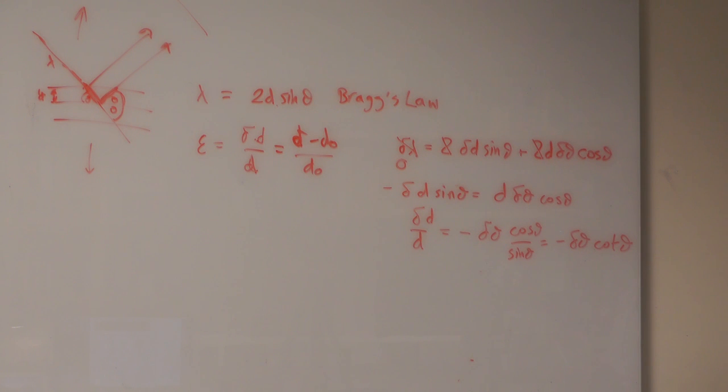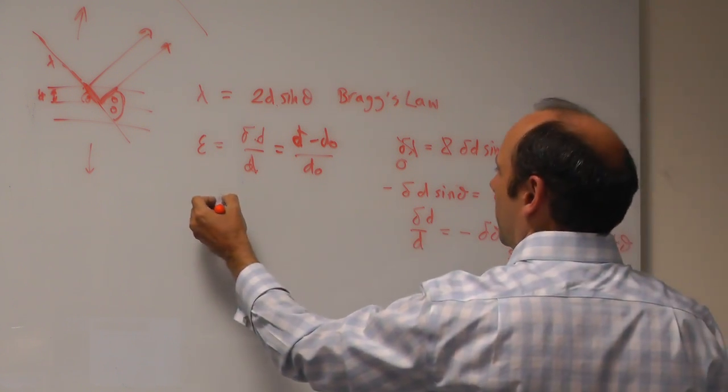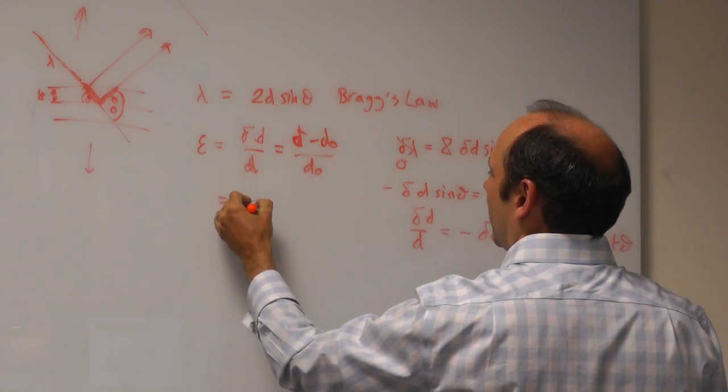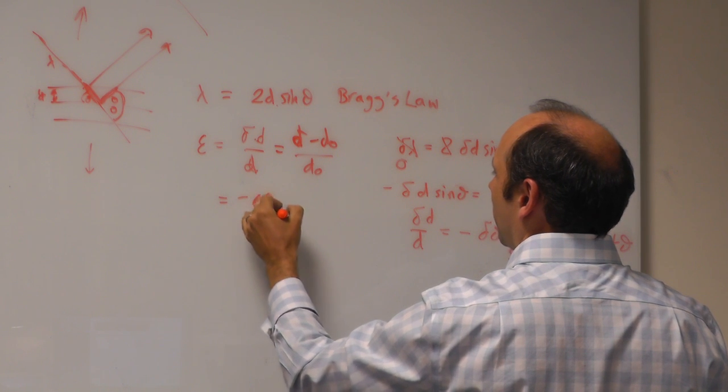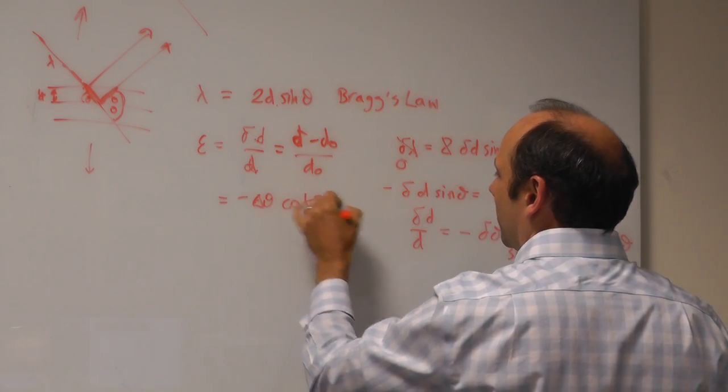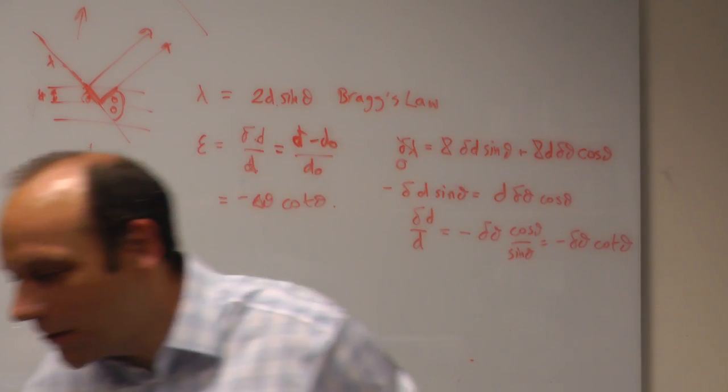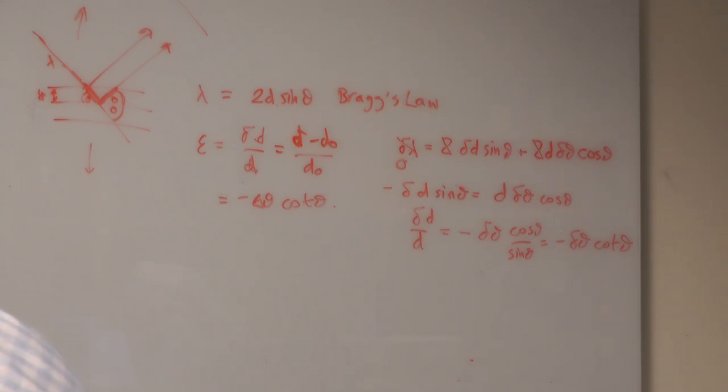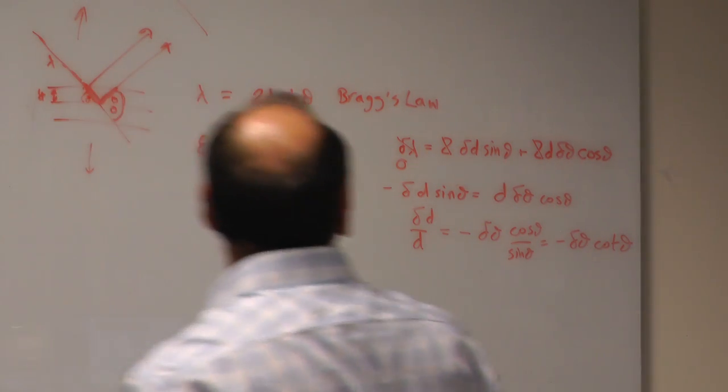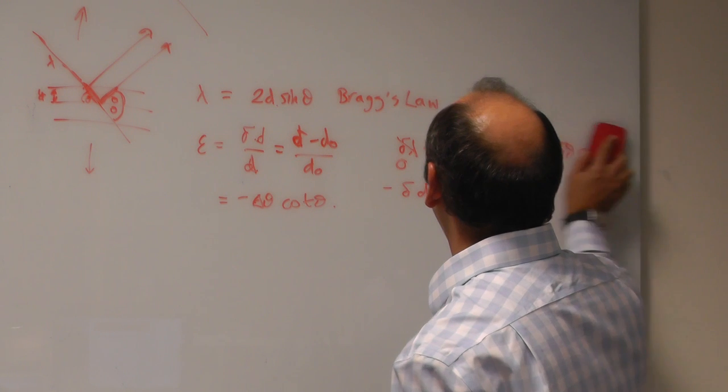So what I've got here is that my strain is equal to minus delta theta, the change in theta, cot theta. Very nice. That's a very nice little equation.